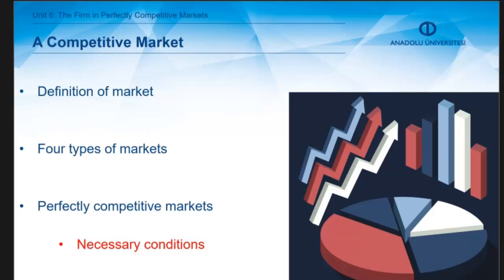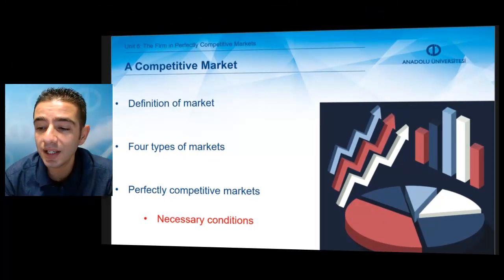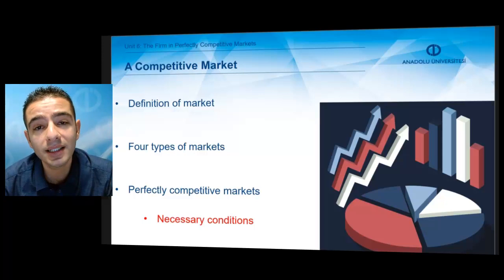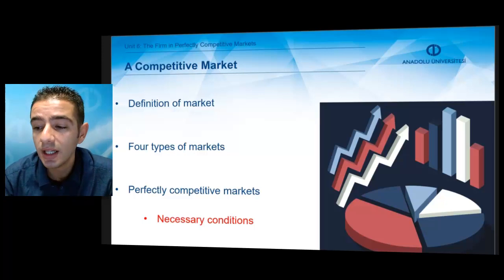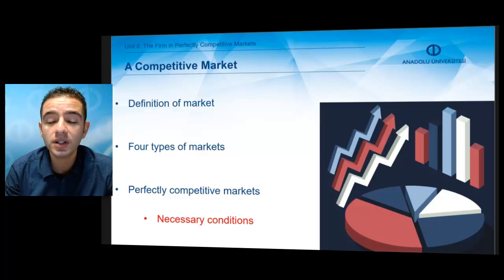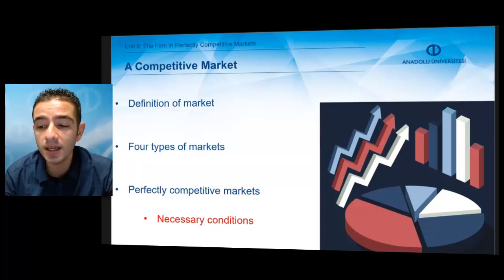In the literature, based on certain characteristics and features, we can identify four types of market structures, which are called perfect competition, monopolistic competition, oligopoly, and monopoly. Among them, our focus in this unit is perfect competition, which refers to the market for the exchange of identical products in which there are many sellers and buyers.